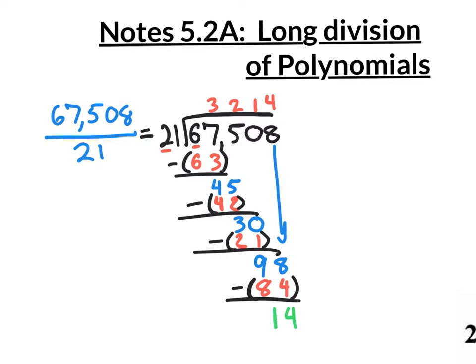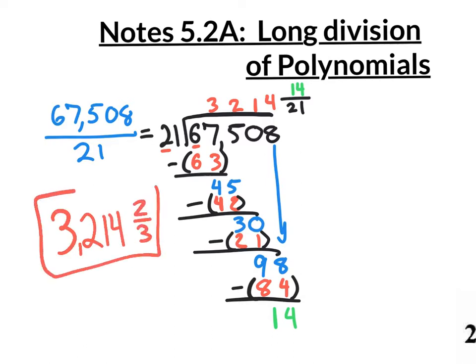I hope you remember that whenever you do have a remainder, you simply put it over the original divisor. So the answer is 3,214 and 14 over 21. Now, if you could reduce the fraction, please do so. In this case we can — 14 over 21, you could reduce both by 7, giving you a final answer of 3,214 and 2 thirds. 14 divided by 7 is 2, and 21 divided by 7 is 3. So there's your final answer.